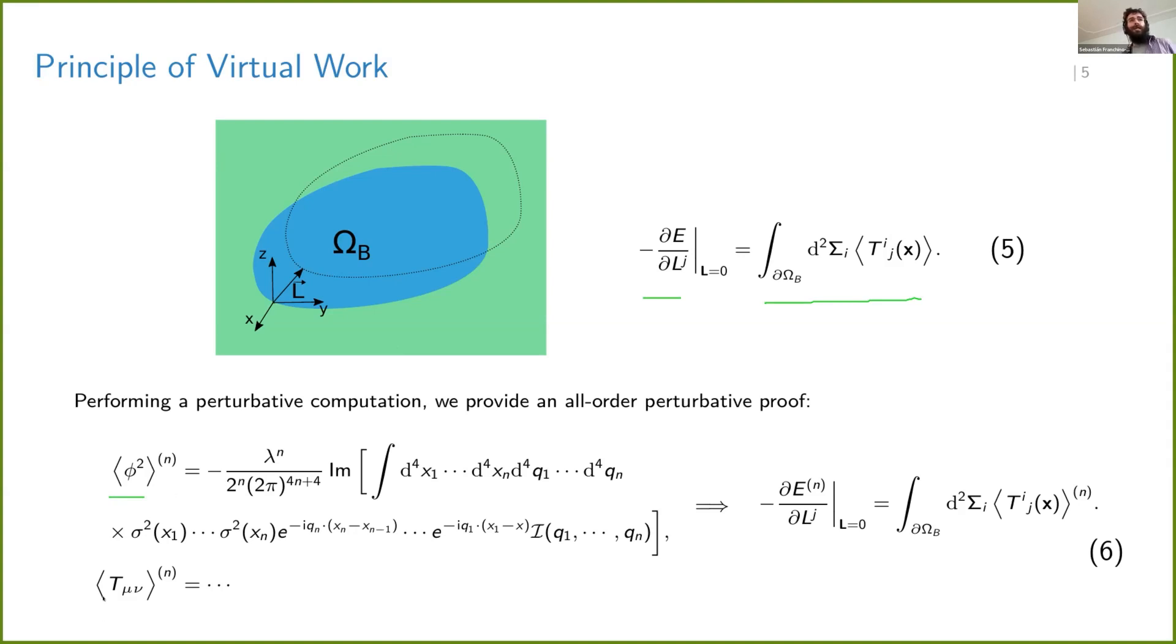Then we have used those results to go to the T_mu_nu. And it is important to notice that we have employed the conservation law that I have shown you in the previous slide. And in that way, we have an order-by-order proof that the principle of virtual work works in our case.